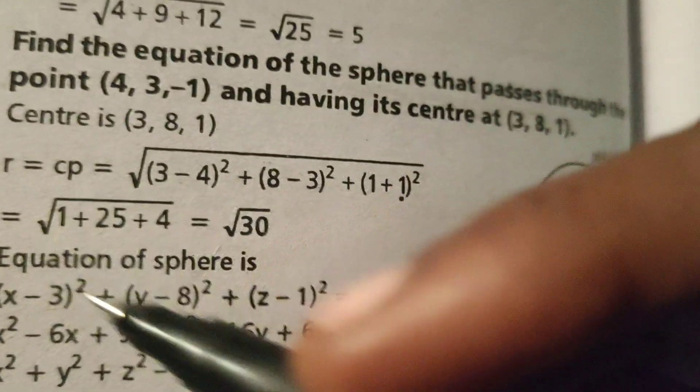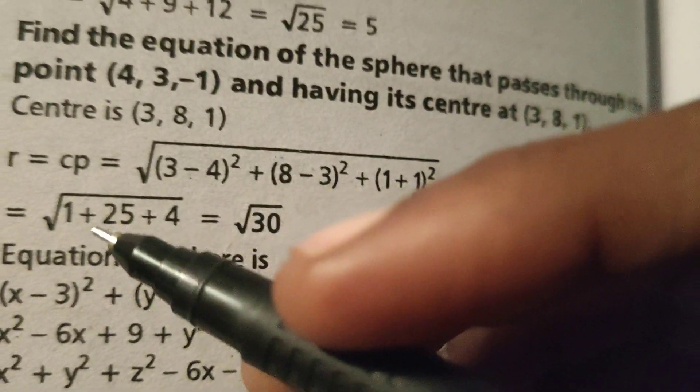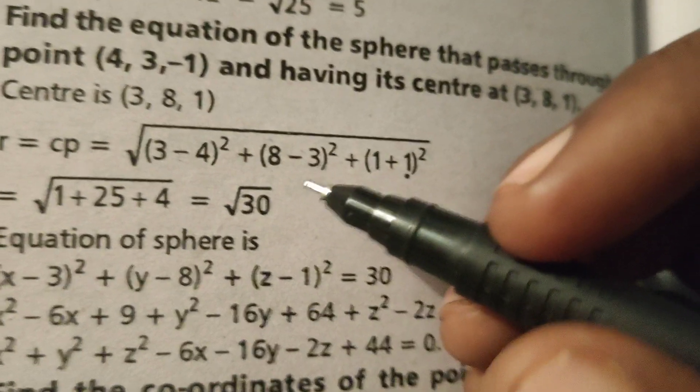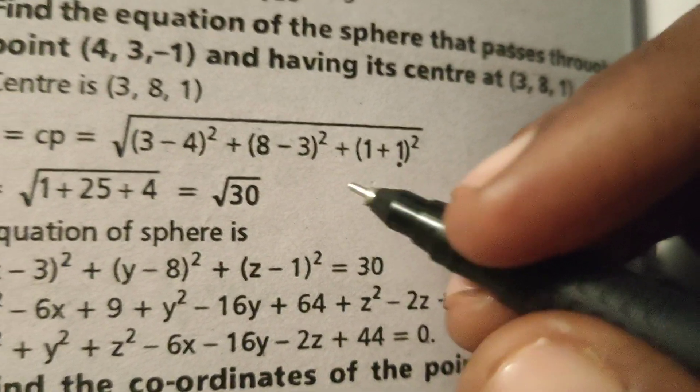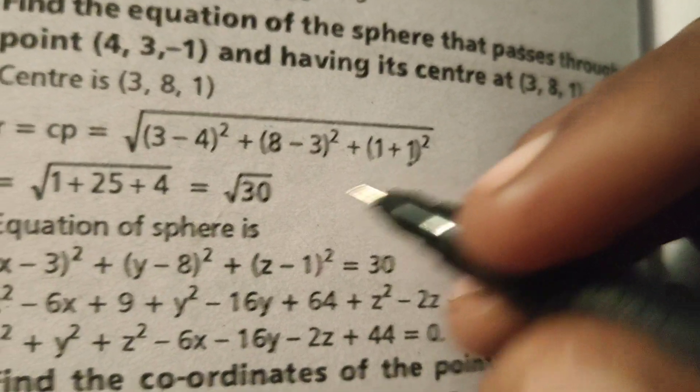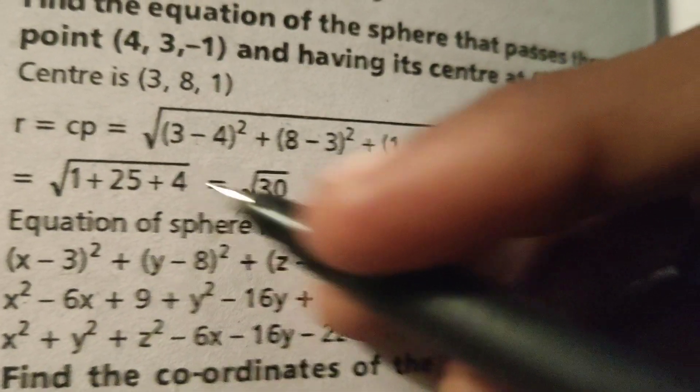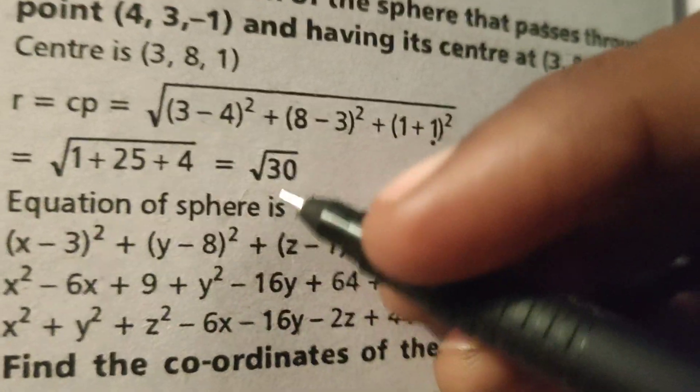Root of 3 minus 4 is minus 1 whole square, that is plus 1. 8 minus 3 is 5 squared, that is 25, plus 1 plus 1 is 2 squared, that is 4. The simplification gives us 1 plus 25 plus 4 equals root 30.